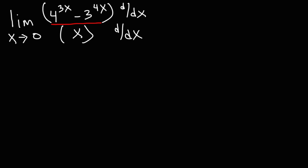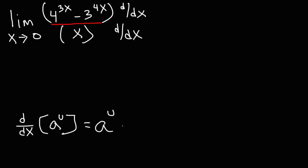So what is the derivative of 4 raised to the 3x? To find the derivative of a constant raised to a variable — let's say a to the u — it's equal to a to the u, times the derivative of the exponent u prime, times the natural log of the constant a. So the derivative of 4 to the 3x is going to be 4 to the 3x, times the derivative of 3x which is 3, times the natural log of 4.